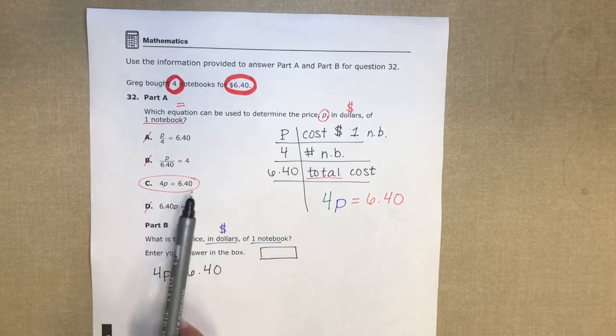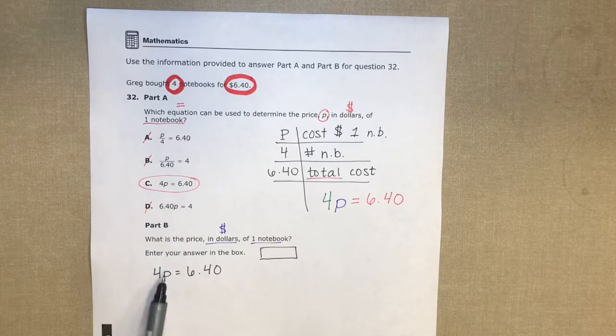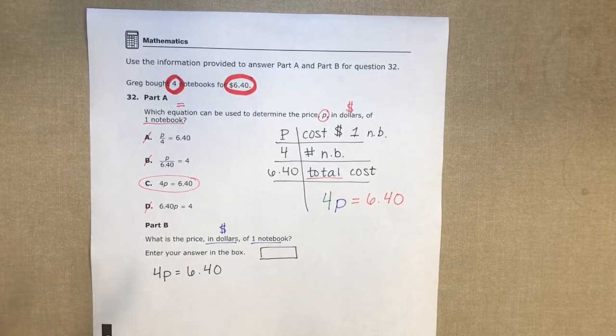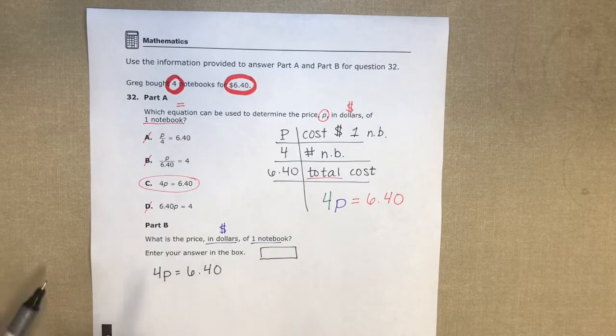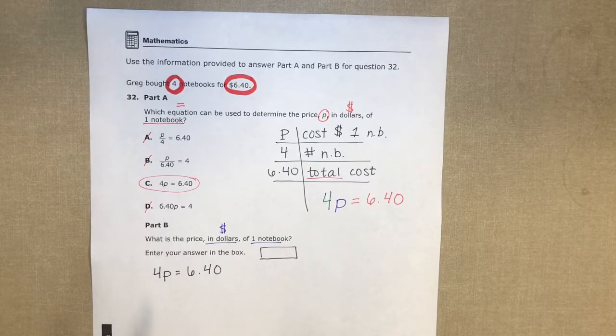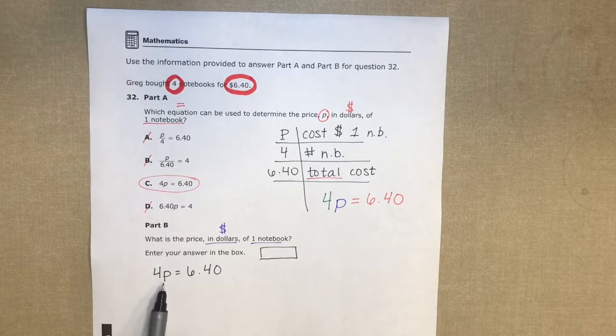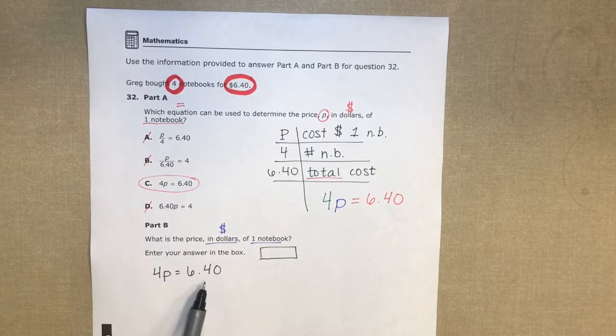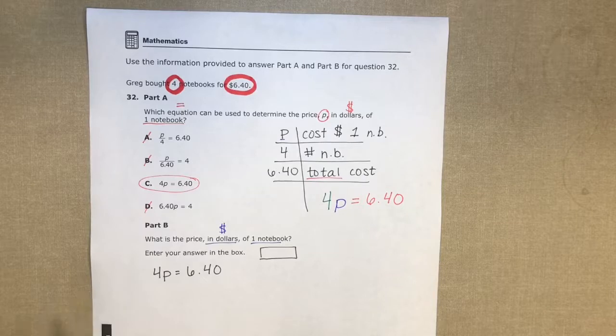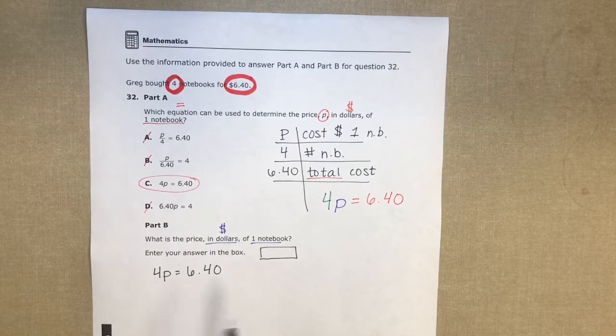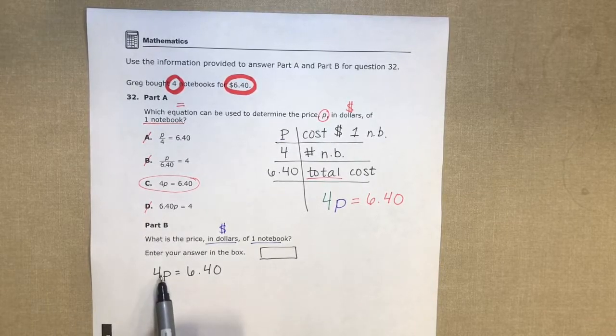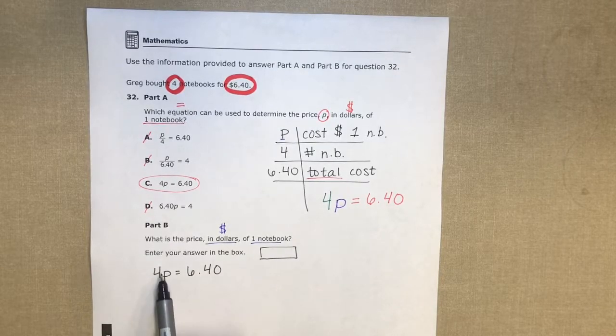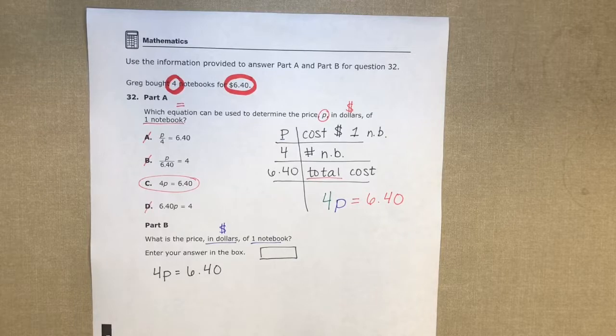Part B depends on my answer to Part A, so my answer to Part A, 4P equals 640, is what I'm starting with. Now this is just a one-step equation. I'm multiplying four times the cost of one notebook and it's giving me the total cost of all the notebooks, which is 640. So in order to solve that, I need to do the inverse or the opposite of multiplication to find the cost of one notebook. So the opposite of multiplying by four is going to be dividing by four.